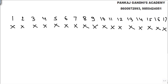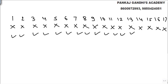All bulbs are initially off. We ask the first person to go and change all the multiples of 1. Obviously, every bulb number from 1 to 100 is a multiple of 1. So the first person changes all of them — all became on, from 1 to 100.